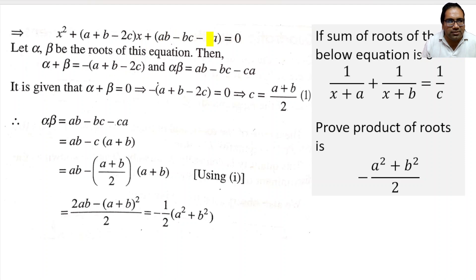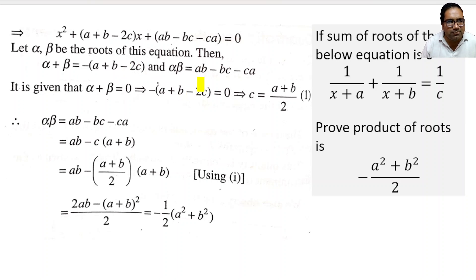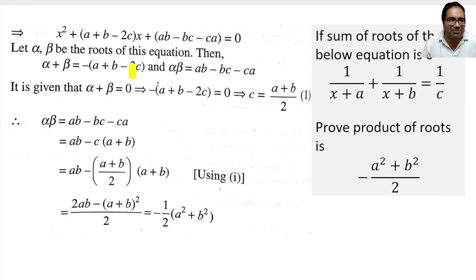The product of roots is ab − bc − ca. Now, since the sum of the roots equals 0, we have −(a + b − 2c) = 0, which means a + b − 2c = 0. Therefore c = (a + b)/2.